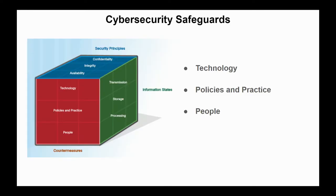The third dimension of the cybersecurity cube defines the skills and disciplines a cybersecurity professional can call upon to protect cyberspace. The first includes technologies, devices, and products available to protect information systems and fend off cyber criminals — such as antivirus software, firewalls, and intrusion detection systems. Cybersecurity professionals must also build a strong defense by establishing policies, procedures, and guidelines that enable users of cyberspace to stay safe, including administrative controls, acceptable use policies, and incident response procedures.